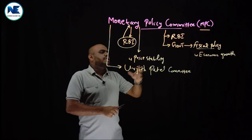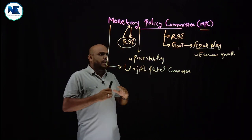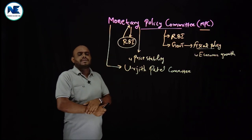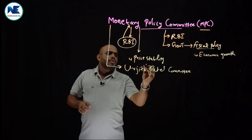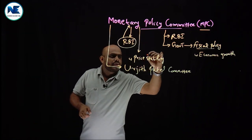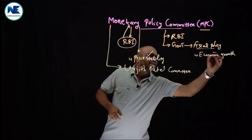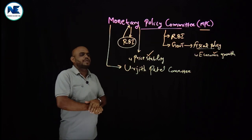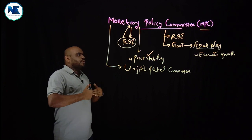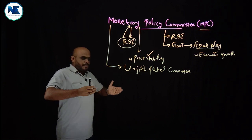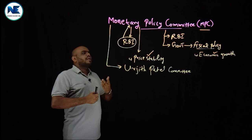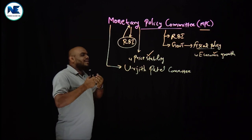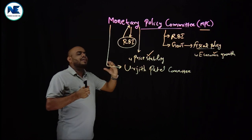Now, monetary policy is the institution's role to frame monetary policy, and that monetary policy should consider price stability as well as economic growth. There is a proposal of inflation targeting which we will discuss in the coming video. The government proposed that price stability will be concerned with RBI and monetary policy, but they should also keep in mind that economic growth should be there.